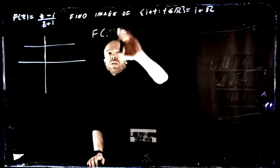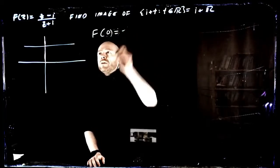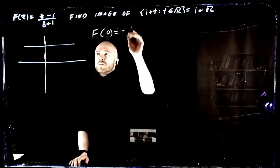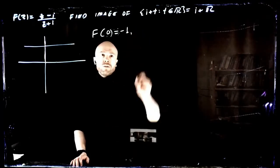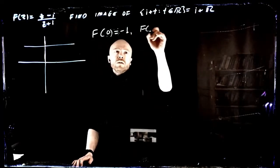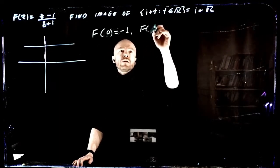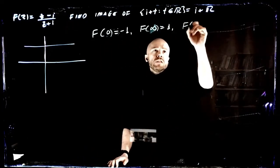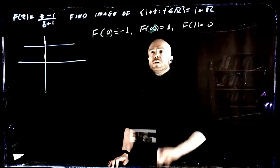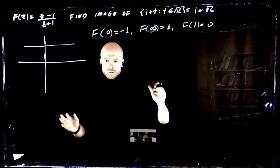If we take f of 0, that's equal to minus 1 as we saw before. If we do f of infinity, that's equal to 1, and if we do f of i, then that's equal to 0. These are all points on the real line.